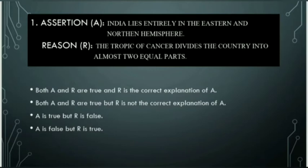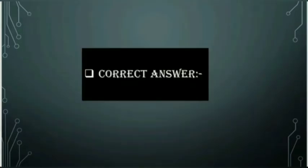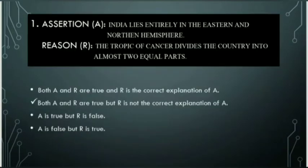Option C - A is true but R is false. Option D - A is false but R is true. And the correct answer is Option B. Both A and R are true but R is not the correct explanation of A.